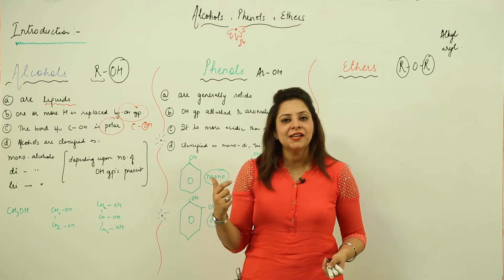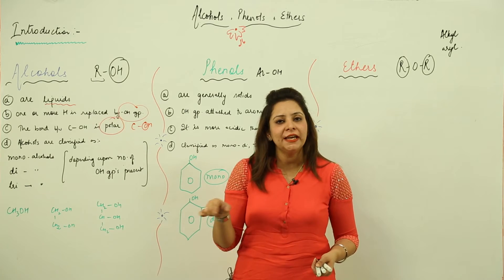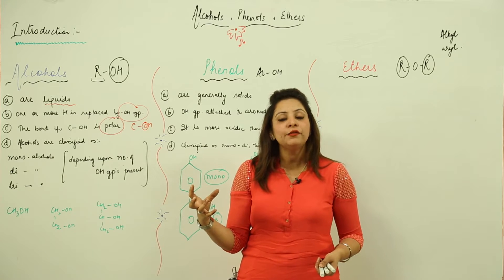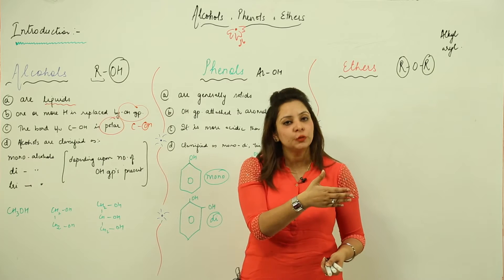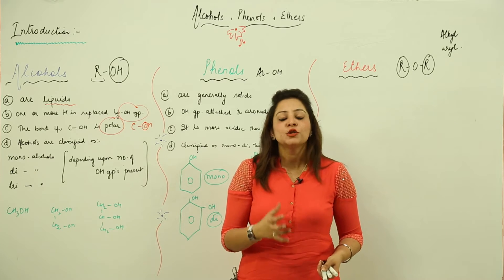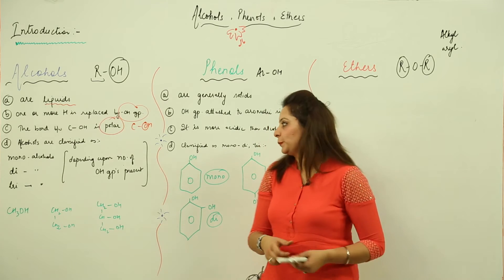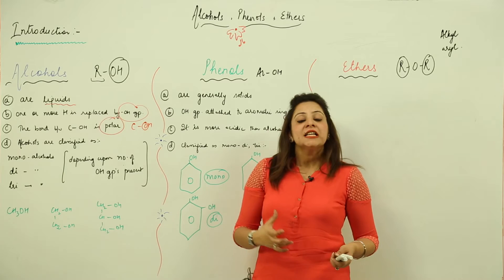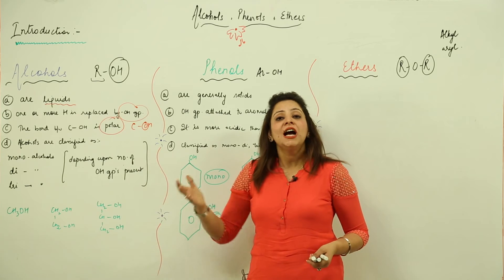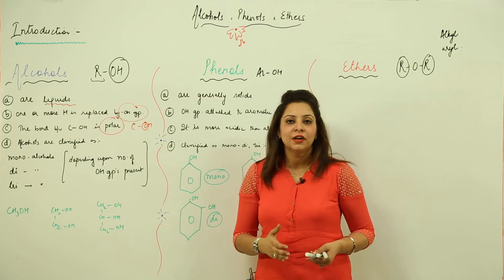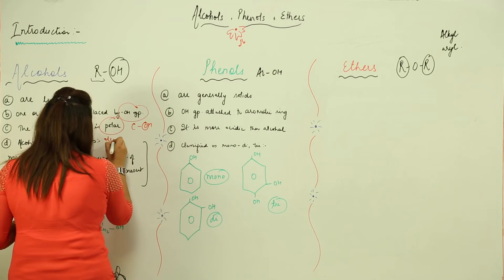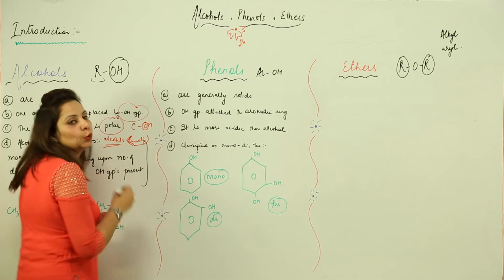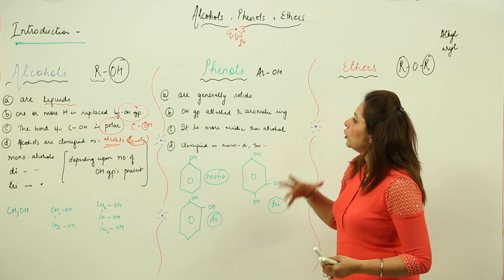Here the OH is directly bonded to C, meaning there is a bond between C and O. Oxygen, being more electronegative, attracts the shared pair toward itself, so it acquires a partial negative charge and the carbon acquires a partial positive charge. This confirms the bond is polar in nature. As far as acidity is concerned, alcohols are actually very less acidic — they are even less acidic than water.